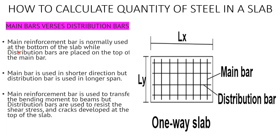The main reinforcement bar is placed at the bottom of the slab, while the distribution bars are placed on top of the main bars. The main bar runs in the shorter direction and the distribution bar runs in the longer span. The main reinforcement bar is used to transfer bending moments to beams, while the distribution bars are used to resist shear stress and cracks developed at the top of the slab.